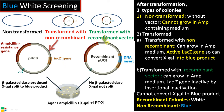In the case of transformed recombinant vector, the gene of interest has been inserted into the lacZ region, so that region is no longer active and cannot synthesize beta-galactosidase. Therefore, these colonies remain white. It is very easy to distinguish: recombinant colonies are white, while non-recombinant colonies are blue. This is the main advantage of the PUC vector over the PBR 322 vector — selection is very easy.